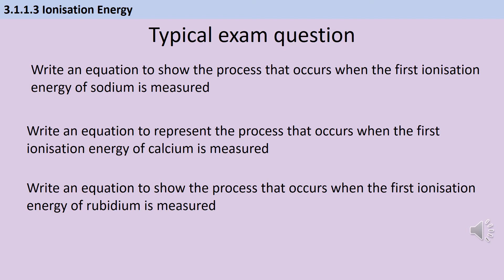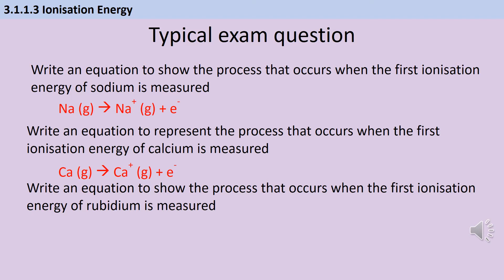Writing the equation for the first ionization energy is a really common one-mark question. For sodium: one mole of gaseous Na breaks apart to make gaseous Na+ ions and an electron. For calcium: one mole of gaseous Ca makes one mole of gaseous Ca+ ions and an electron — it doesn't matter that calcium should make 2+ ions. For rubidium: gaseous atoms split to make gaseous ions with a single positive charge and an electron for every atom.